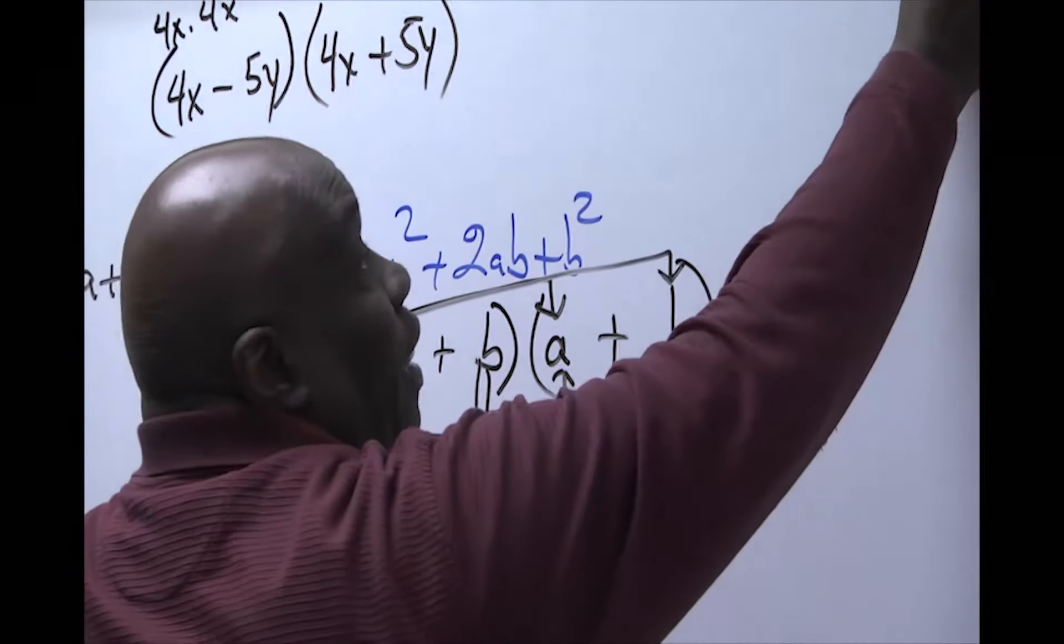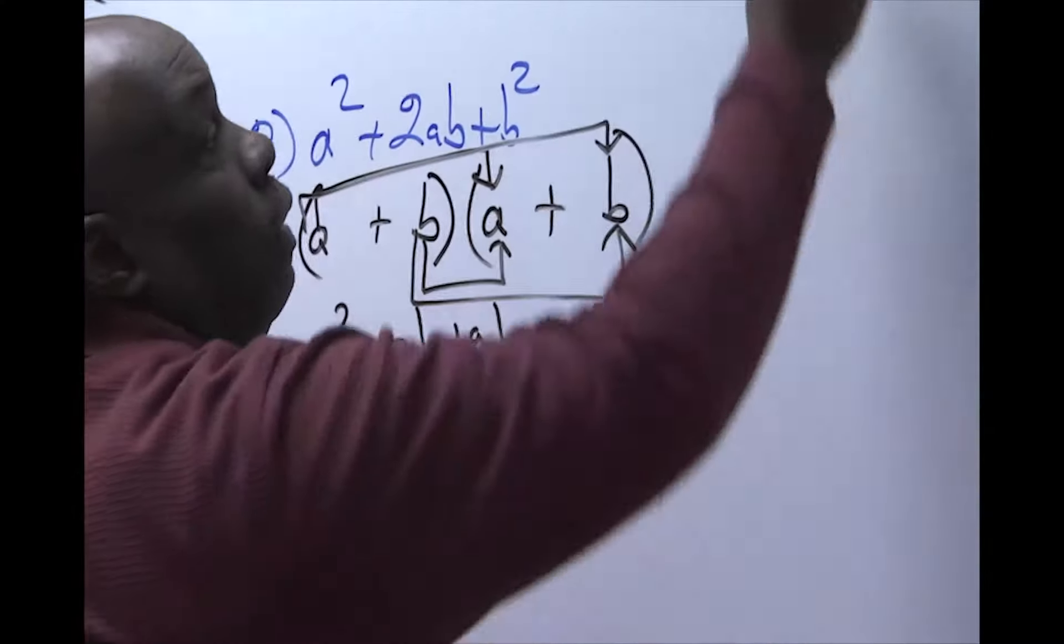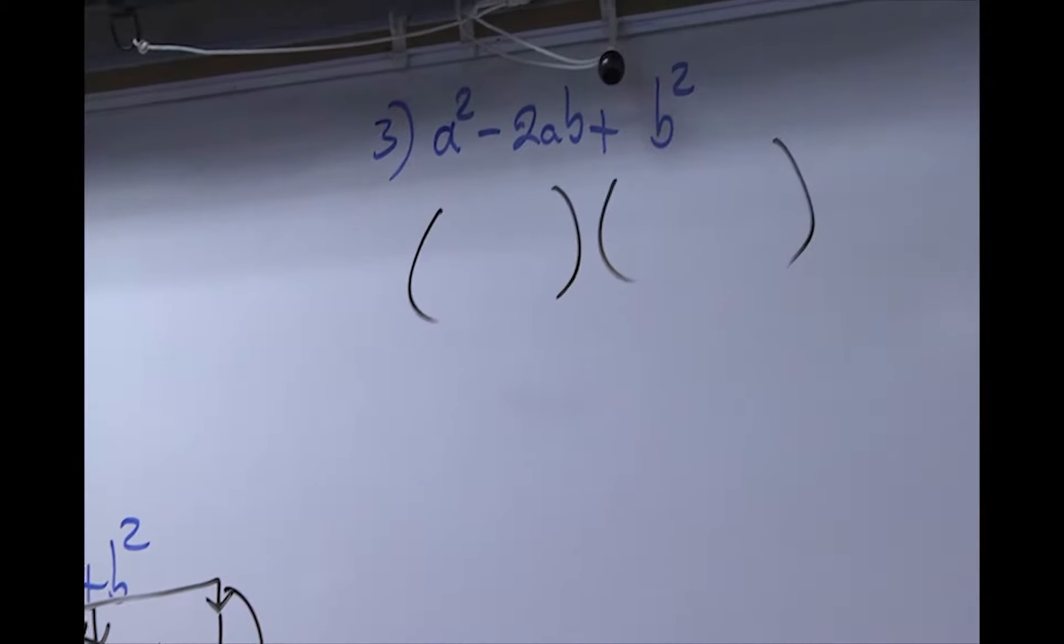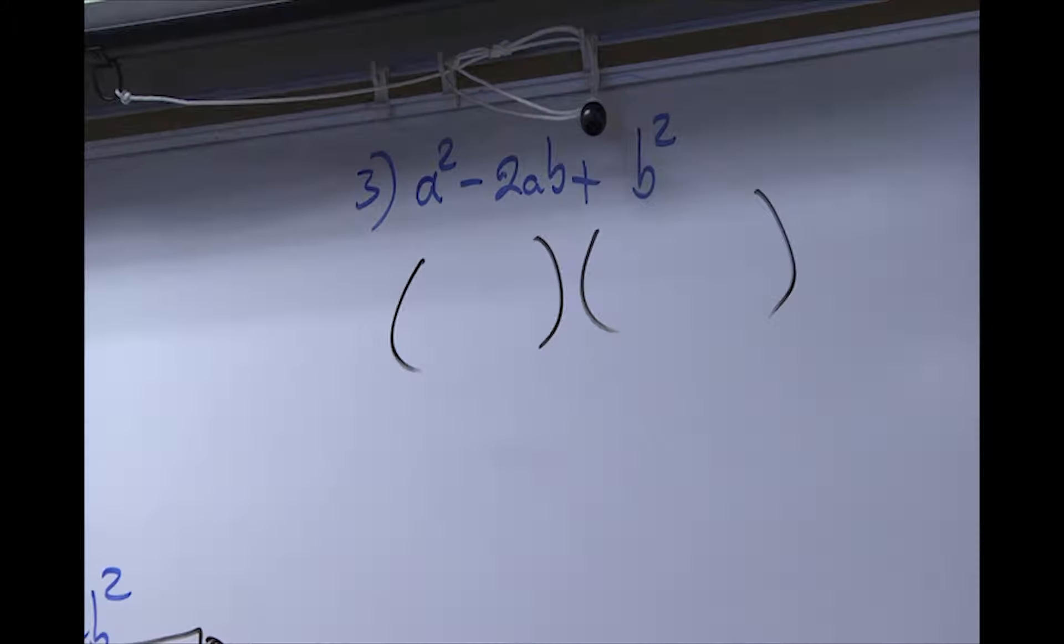Likewise for number 3, we will have two sets of parentheses. But you notice here that the middle term is negative. But if you look, negative times negative will give us positive. So again, you separate. a² will be a times a.